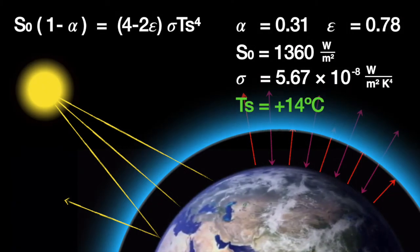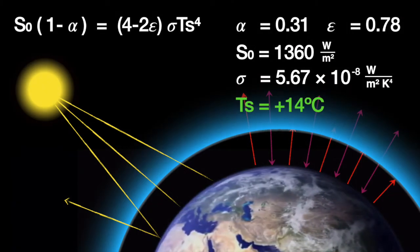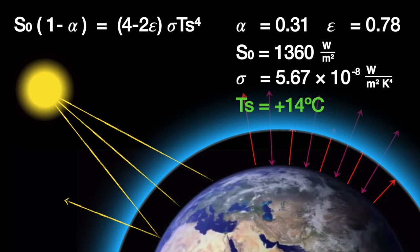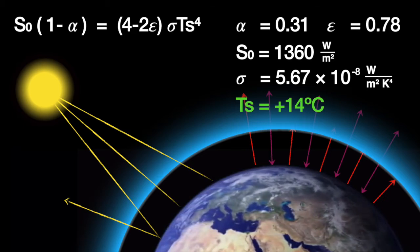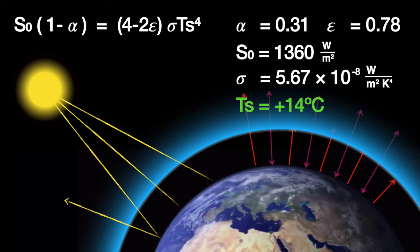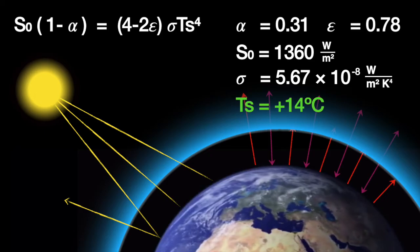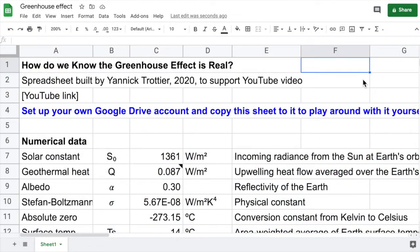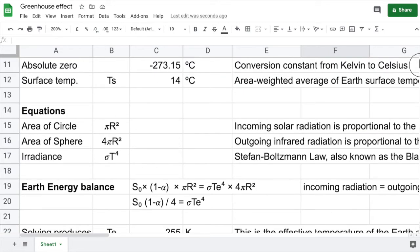Now, you should be wondering where I got the emissivity value from. That wasn't a measured value. I just picked an atmospheric emissivity that would give us the right surface temperature. You can try out different values yourself. I created a Google Drive spreadsheet for you that you can copy and play around with.